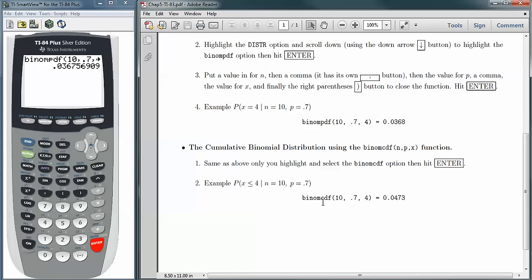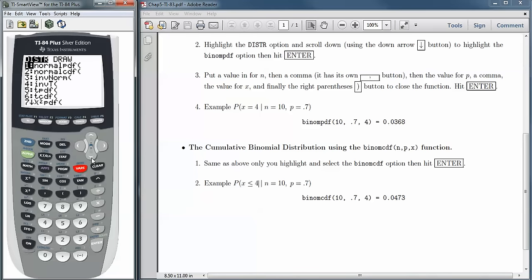But the usage is basically the same. We go and we find it by going to second button, VARS. And then we scroll down until we find BINOMCDF. And once we get there, it's right below BINOMPDF, hit Enter.